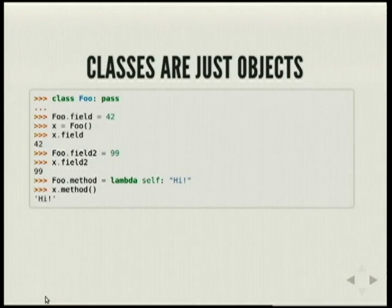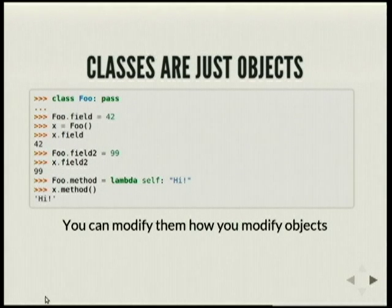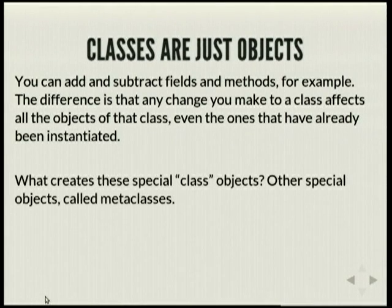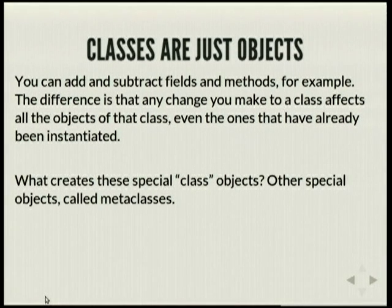Classes in Python are just objects, so you can add a field, add methods, and it'll be passed on to any instance of that class. You can modify them however you can modify objects in Python — you can add fields, you can remove fields. The difference is all of the objects of that class, even the ones that have been instantiated, will be getting those values.